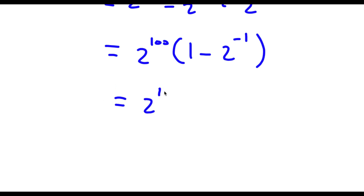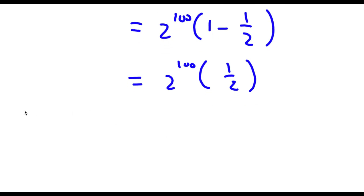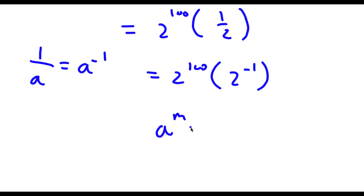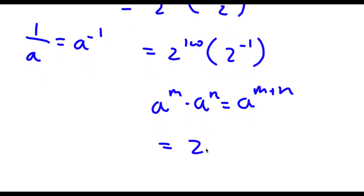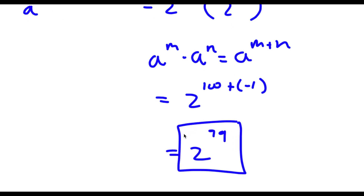Now 2 to the power of negative 1 is one half, and 1 minus one half equals one half. So I have 2 to the power of 100 times one half. Since one half is 2 to the power of negative 1, I can write this as 2 to the power of 100 times 2 to the power of negative 1, which equals 2 to the power of 100 plus negative 1, equal to 2 to the power of 99. That's another, more complicated, method of solving this problem.